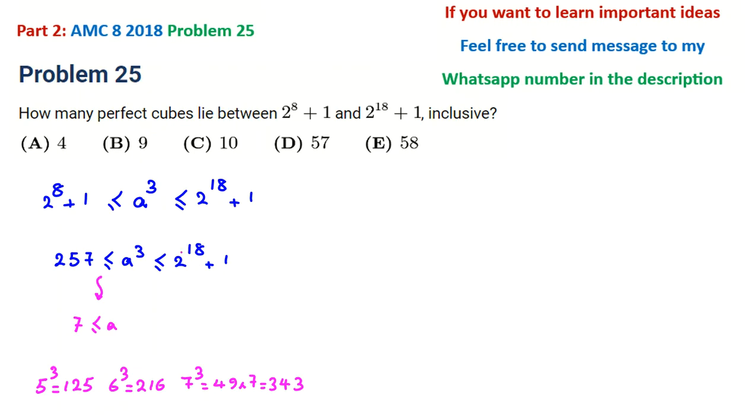For the upper bound, calculating 2¹⁸ directly is hard, so let's solve an easier version. If b³ ≤ 2¹⁸, then b ≤ 2⁶.